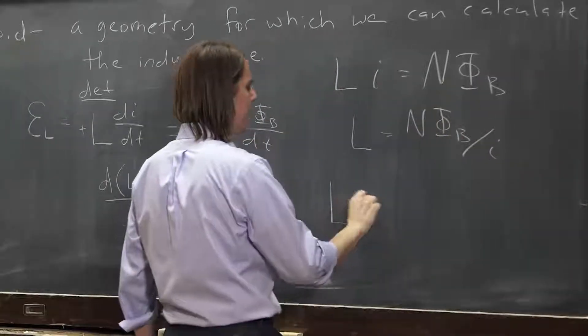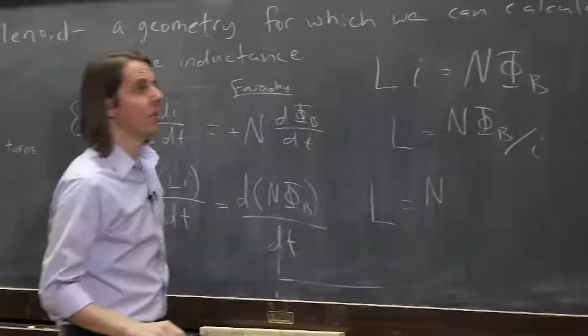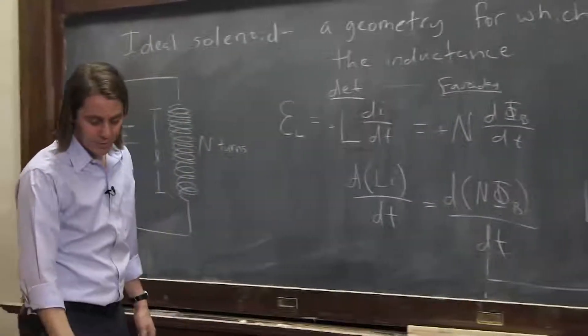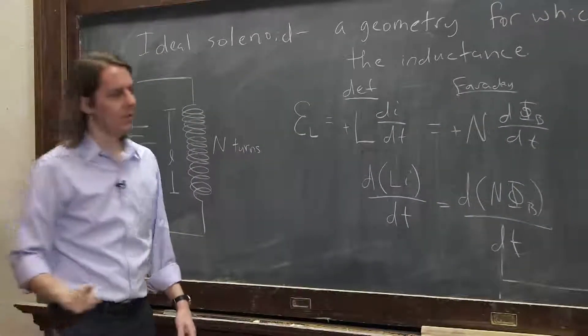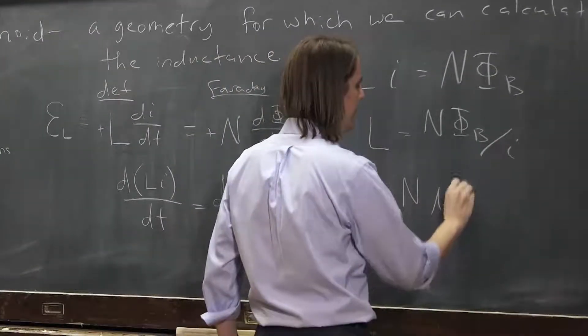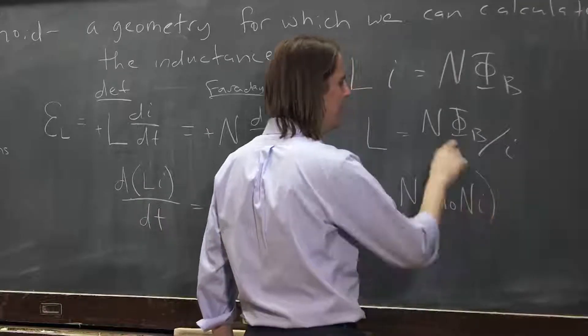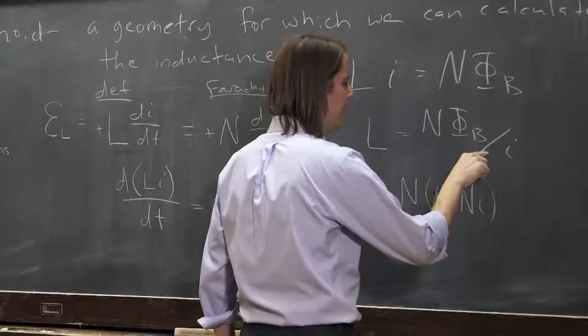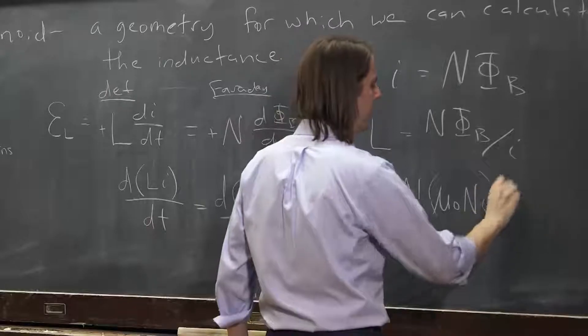And now we can think back to what we calculated for the ideal solenoid. What was its magnetic field? It was mu naught, big n, i. That was B. And then times the flux, we need the area A.